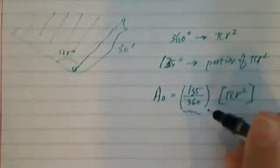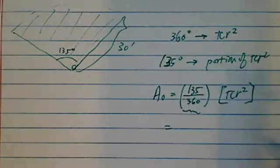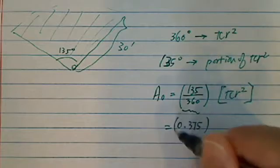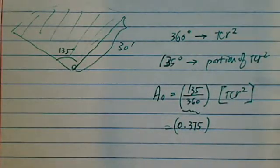And this one turned out to be roughly, let's see if I did it on the calculator, it's 0.375. So it's 37.5% of the circle.